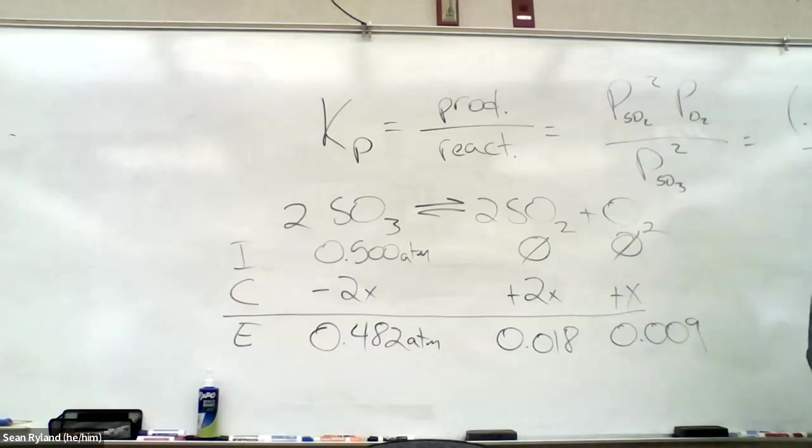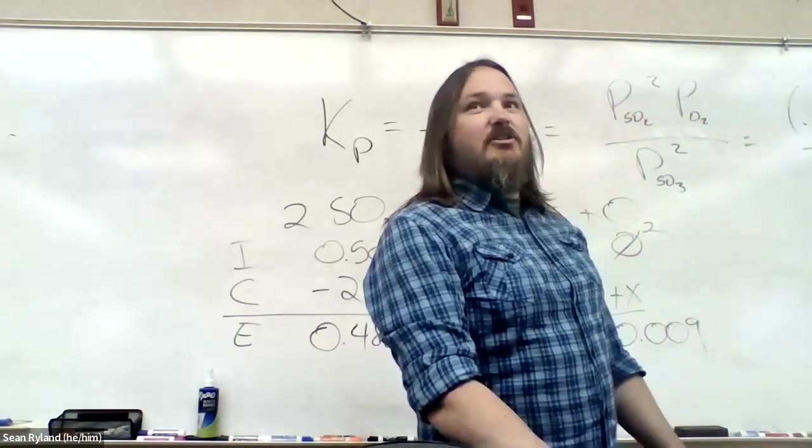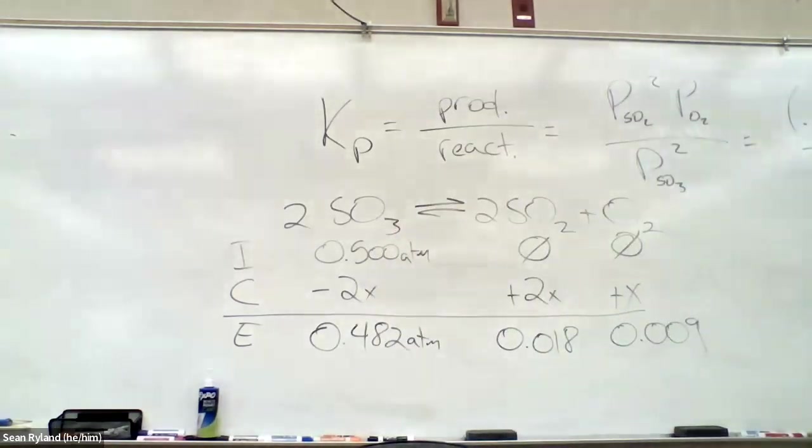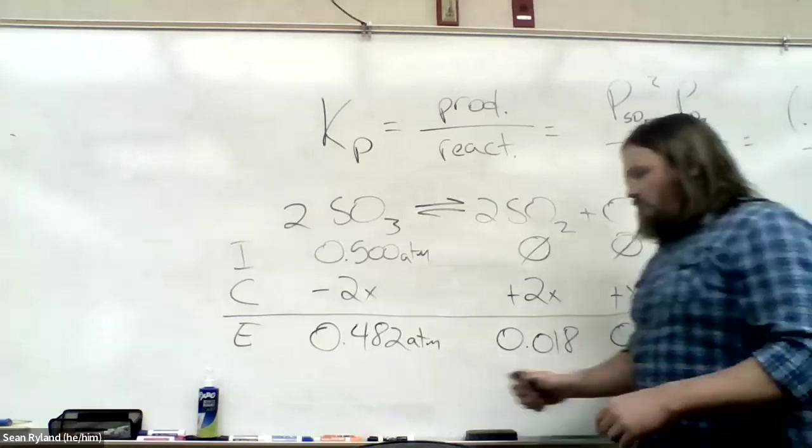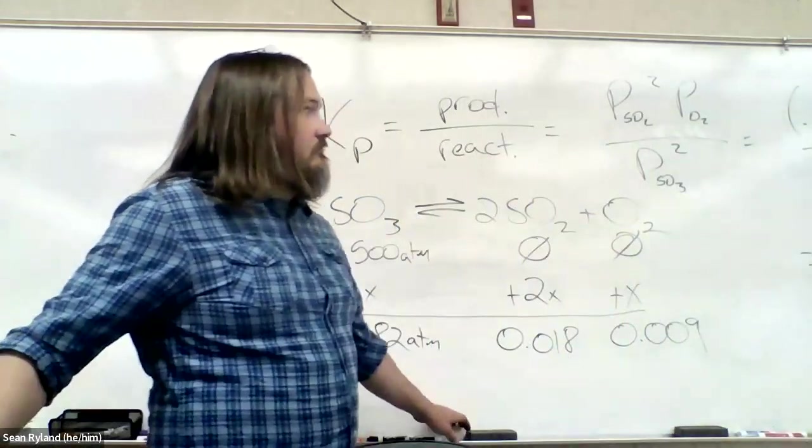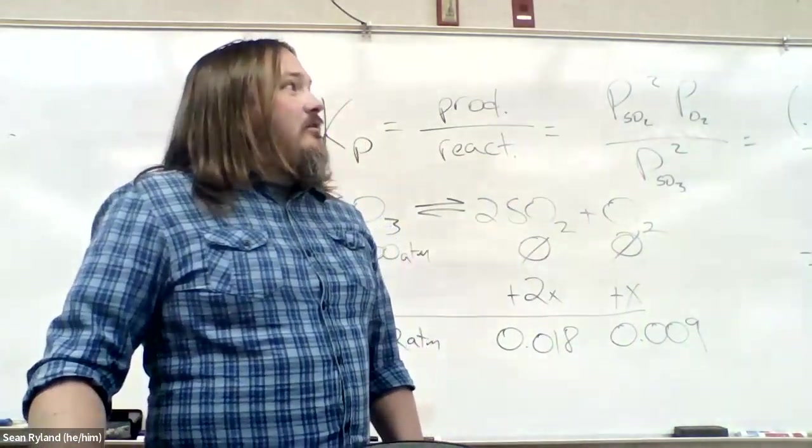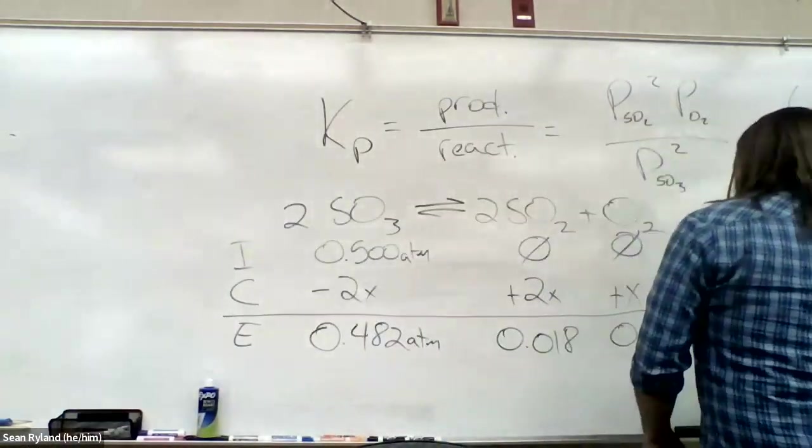0.008 squared times 0.009, all of that over 0.482 squared. We can solve that one or plug it into our calculator. We don't even have to do any solving once we substitute. 0.008 times 0.008 times 0.009 over 0.482 over 0.482. 1.3 times 10 to the minus 5.